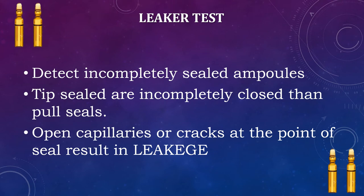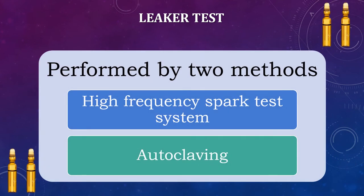Another test for the evaluation of parenteral is the liquor test. The liquor test is intended to detect incompletely sealed ampoules so that they can be discarded in order to maintain the sterile condition of the medicine. Tip seals are more likely to be incompletely closed than pull seals. Open capillaries or cracks at the point of seal result in leakage.